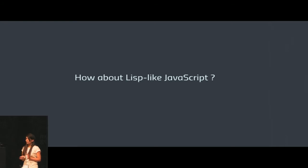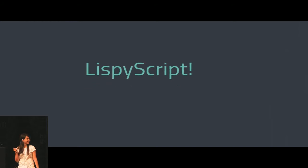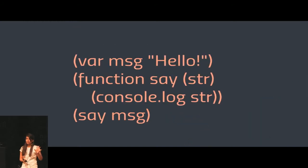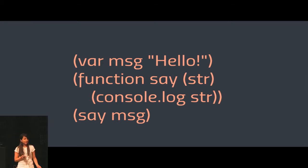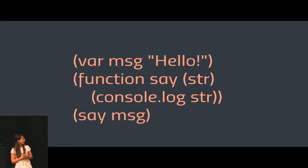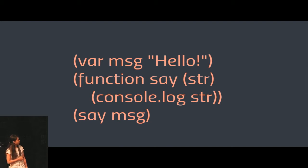Let's look at another example of a domain specific language that employs this particular workflow. How about Lisp-like JavaScript? Lispy Script. This is a code snippet in Lispy Script. It looks very familiar to JavaScript, only there are a lot of parentheses. The statements inside parentheses are expressions. We have three main expressions in the function body: one is a variable declaration, the next is a function declaration, and the last one is a call to the function declared earlier.